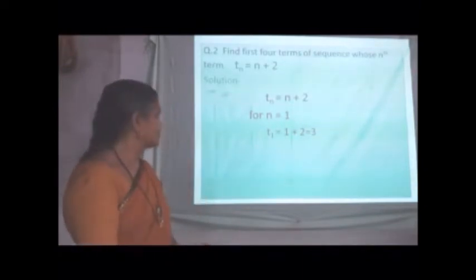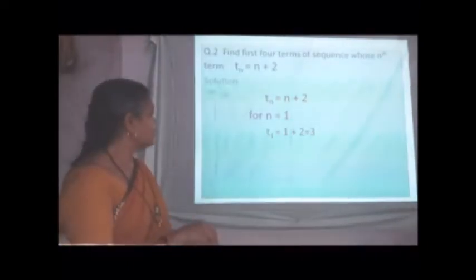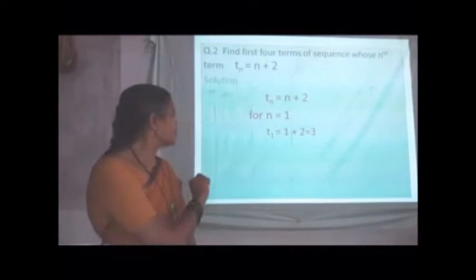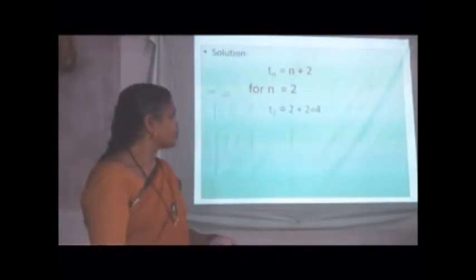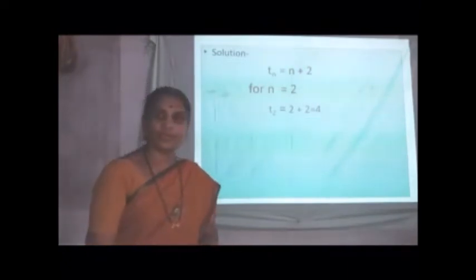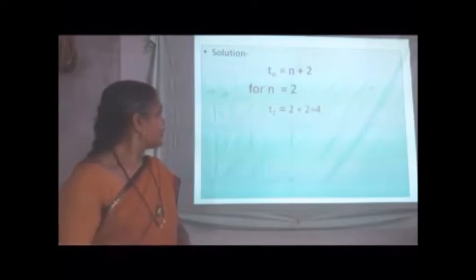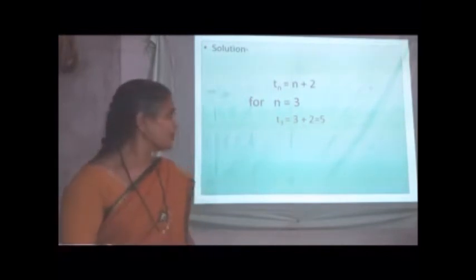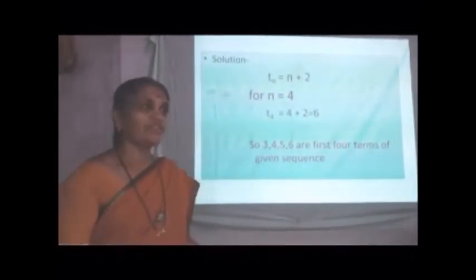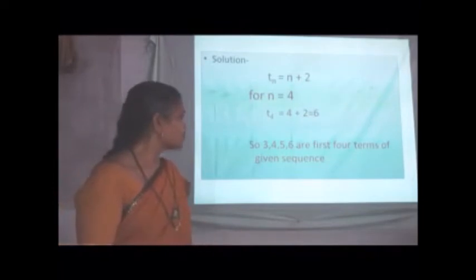So, substituting, look at on screen. Tn is equal to n plus 2 for n is equal to 1. Substitute n is equal to 1, T1 is equal to 1 plus 2 that is equal to 3. For second term, n is equal to 2 substitute T2 is equal to 2 plus 2 that is 4. For n is equal to 3, T3 is equal to 3 plus 2 that is 5. And for n is equal to 4, we have to find 4 first terms. So, T4 is equal to 4 plus 2 is equal to 6. So, 3, 4, 5 and 6 are first 4 terms of given sequence.